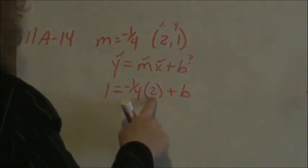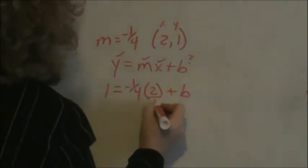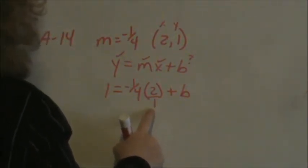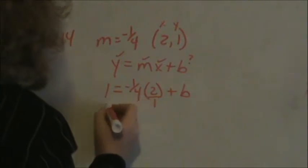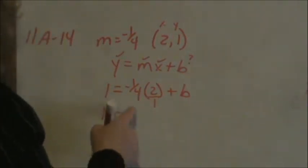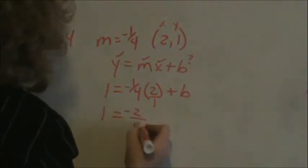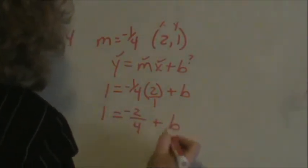Now, how do you make any number into a fraction? By putting it over 1. So this is just a fraction times a fraction. You multiply fractions straight across. Numerator to numerator, denominator to denominator. This is a negative 1 times 2, which is a negative 2. 4 times 1, 4, plus b.